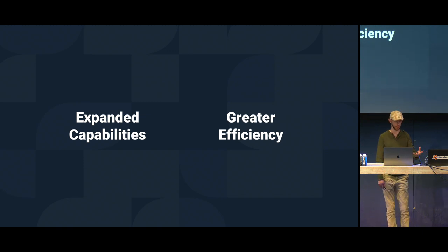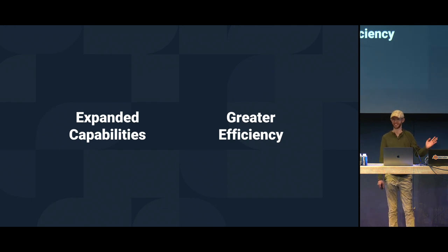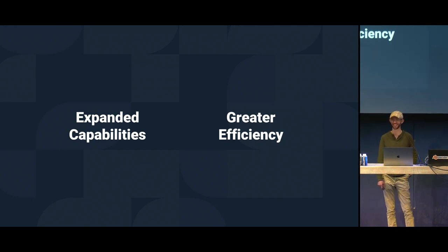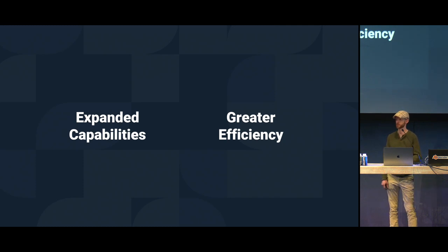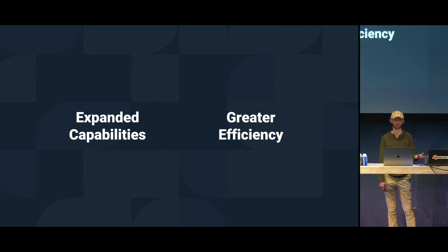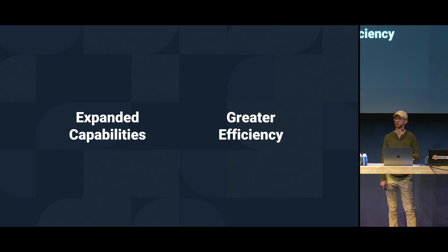Greater efficiency — if I can make the computer do the work for me, I will. I'll spend plenty of time upfront so I can spend less time in the future. That's really important for keeping on top of deadlines, especially for anything that's repeated over many years on long-term client contracts. And expanded capabilities means finding new techniques or approaches that help us do something we couldn't do before.